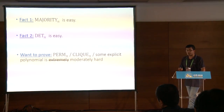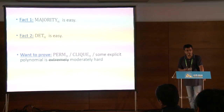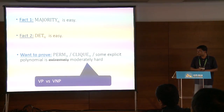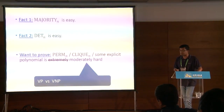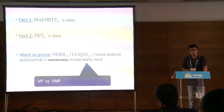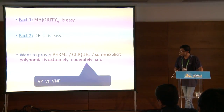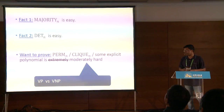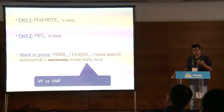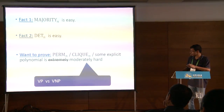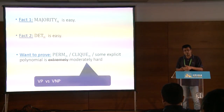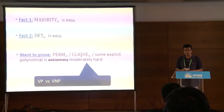We don't know how to prove that these are hard. We would be happy even proving that they are superpolynomially hard to compute. This problem goes by the name of VP versus VNP. It's in some sense the arithmetic analog of P versus NP, but morally it's closer to #P versus TC1 — VNP is morally more like #P and VP is morally more like TC1.